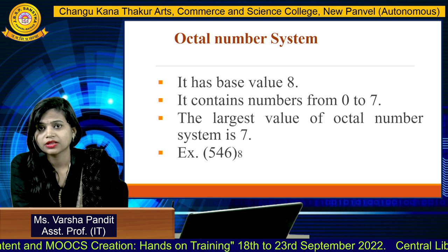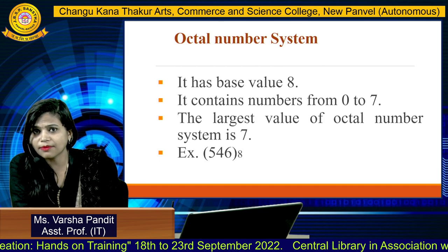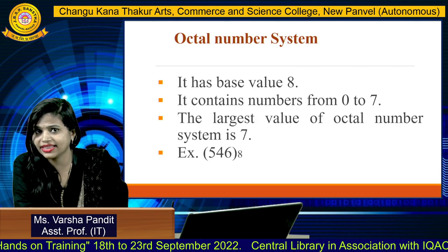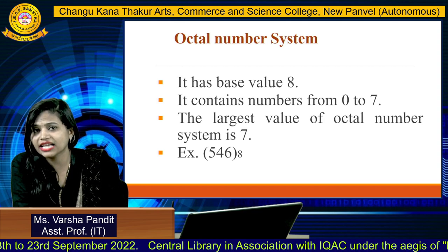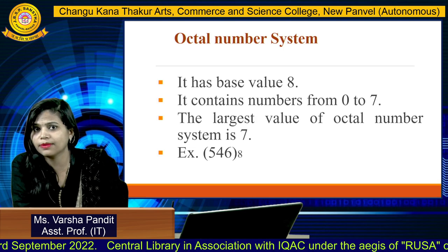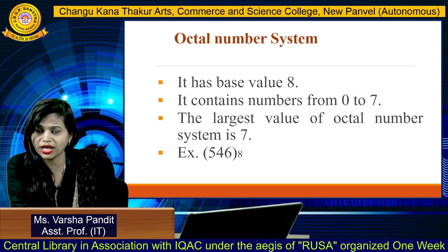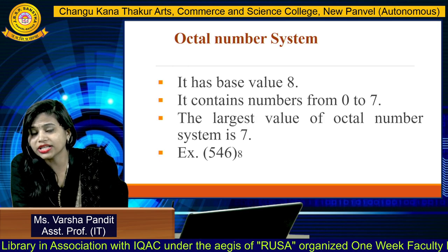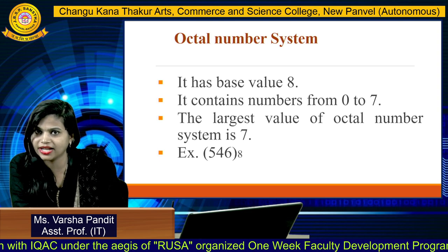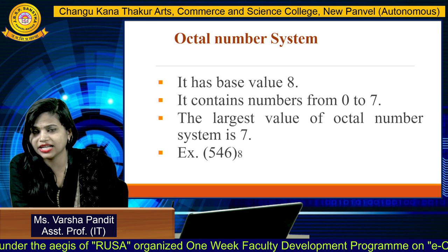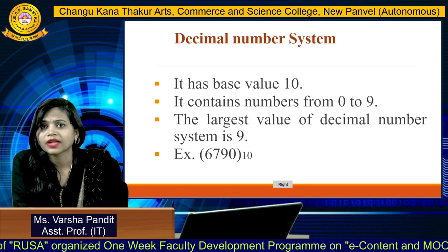The next type is the octal number system. The octal number system has a base value of 8, meaning it contains numbers starting from 0 to 7 — that is 0, 1, 2, 3, 4, 5, 6, and 7 — a total of 8 values. The largest value of the octal number system is 7, so the two-digit largest octal value would be 77. An example of an octal number is 546 base 8.